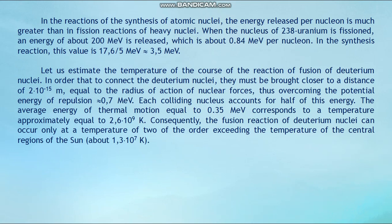Let us estimate the temperature required for the fusion reaction of deuterium nuclei. In order to fuse the deuterium nuclei, they must be brought to a distance of 2×10⁻¹⁵ m — equal to the radius of action of nuclear forces — thus overcoming the potential energy of repulsion of approximately 0.7 MeV. Each colliding nucleus accounts for half of this energy. The average energy of thermal motion equal to 0.35 MeV corresponds to a temperature of approximately 2.6×10⁹ K.